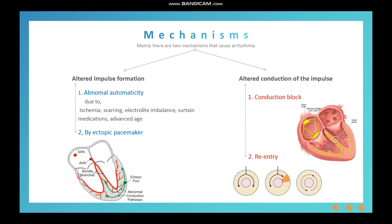You can see in the diagram — here is the SA node, and here in the ventricles there is an ectopic focus that produces impulses, causing altered impulse formation.